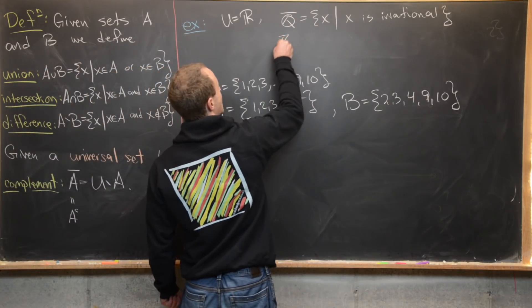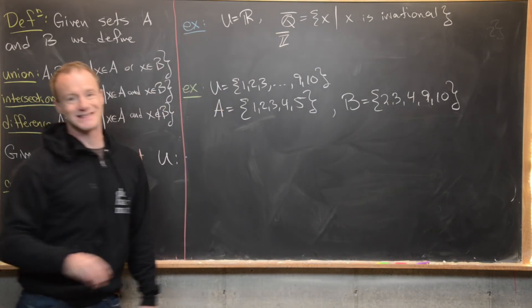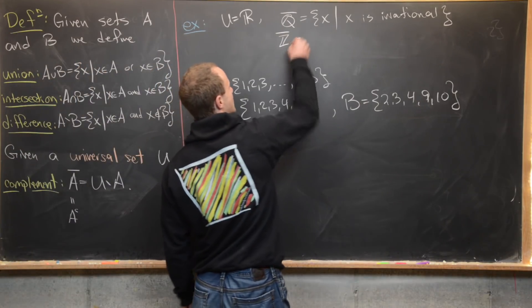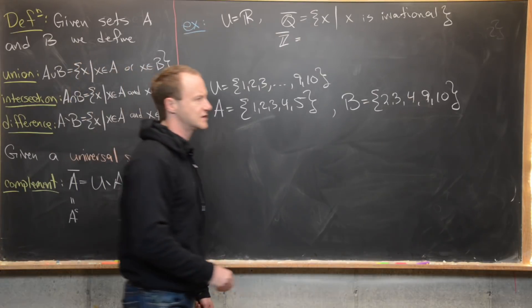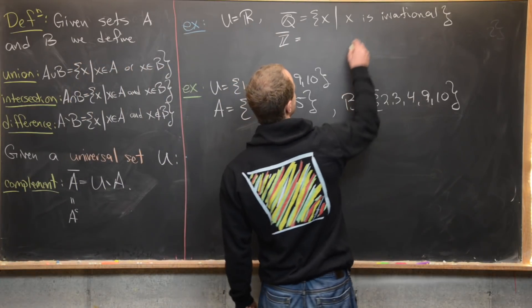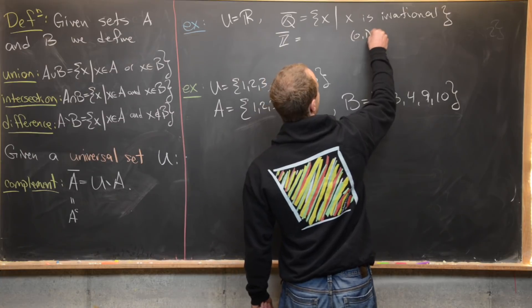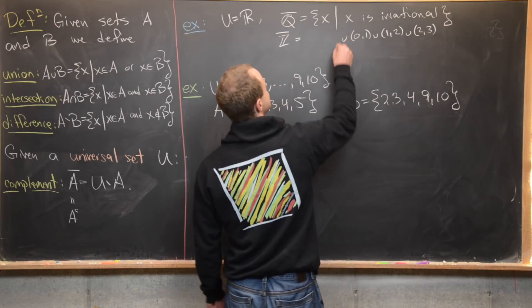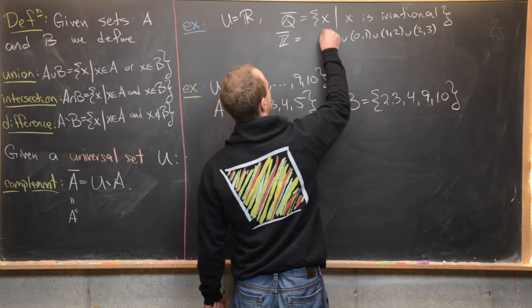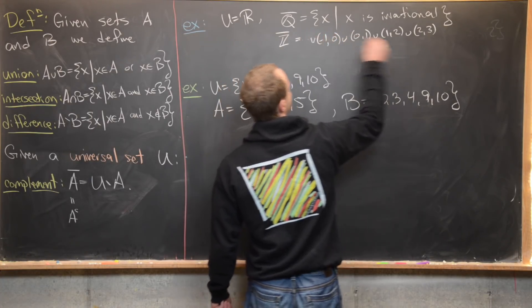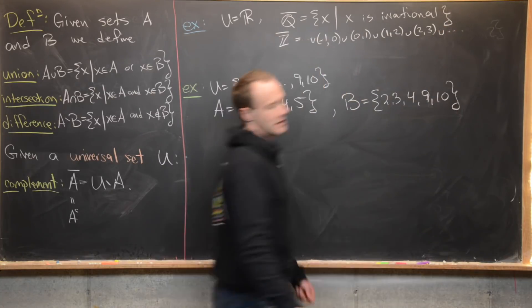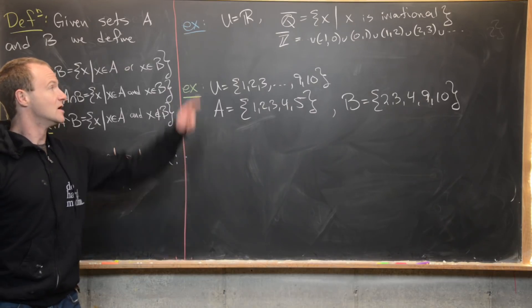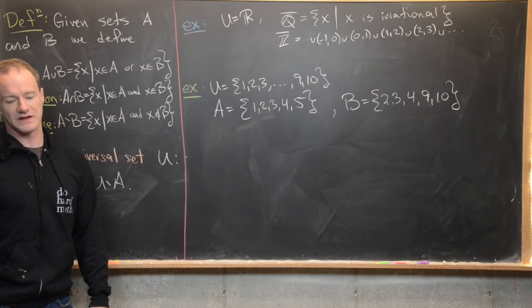For the complement of the integers Z (still with universal set ℝ), we can write this as an infinite union of open intervals: (0,1) ∪ (1,2) ∪ (2,3) ∪ … and similarly on the negative side: (-1,0) and so forth. We'll talk more about indexed and infinite unions later, but this captures ℝ with all integers removed.